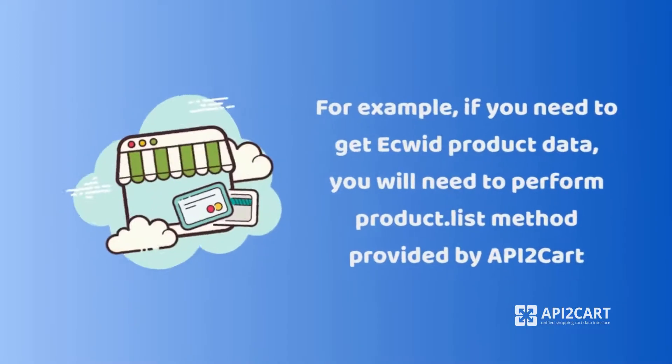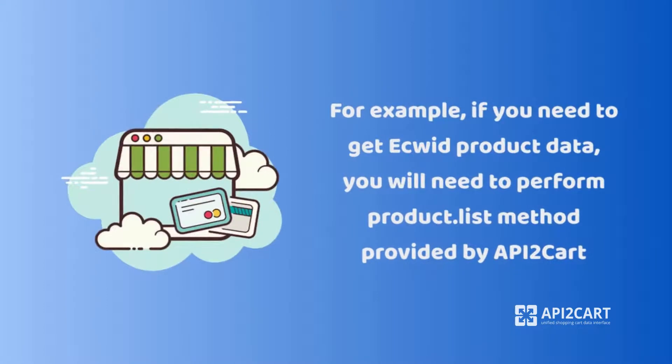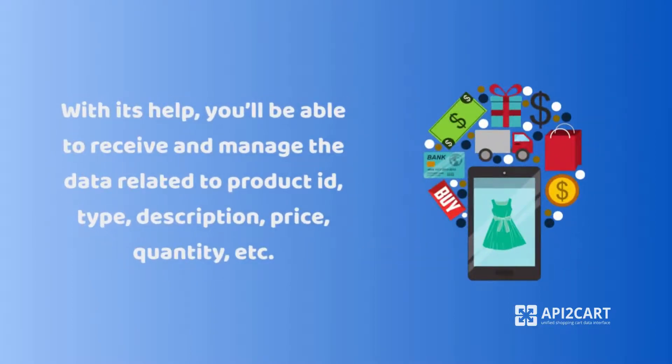For example, if you need to get Ecwid product data, you will need to perform the product list method provided by API2Cart. With its help, you'll be able to receive and manage data related to product ID, type, description, price, quantity, and more.